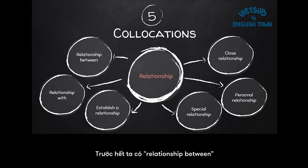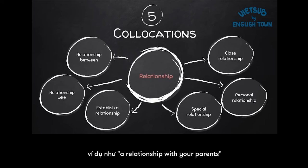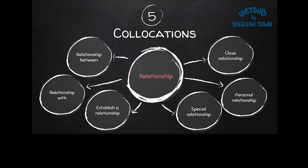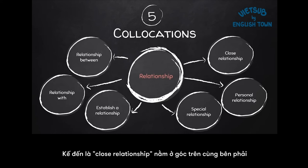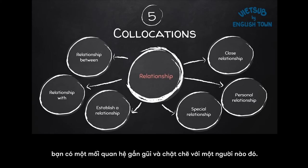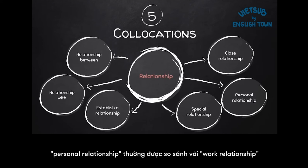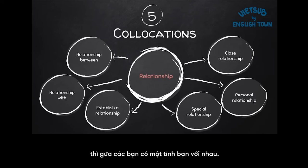The interesting thing about relationship is the collocations. First, relationship between — for example, a relationship between two people. Relationship with — for example, a relationship with your parents or with your boss. Establish a relationship means to make or create a relationship. Next, a close relationship — you can have a good, strong, or close relationship with a person. A personal relationship usually compares with a work relationship — if you develop a personal relationship with someone, maybe you have a friendship with them. And last, a special relationship.